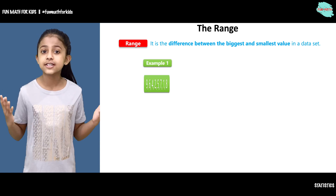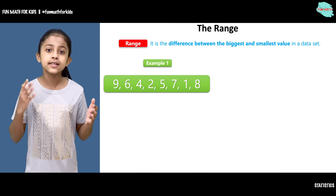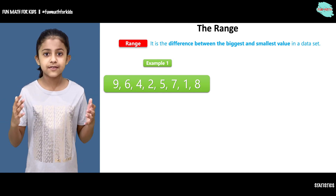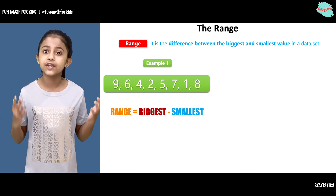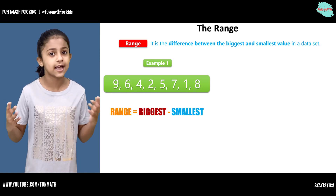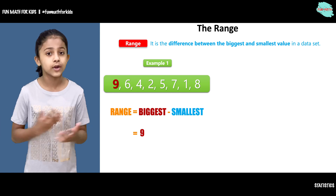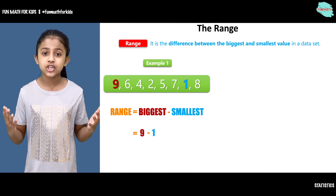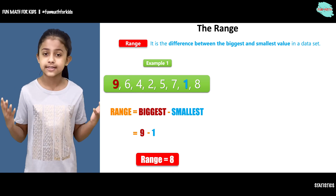In the first example we have a data set. It has numbers 9, 6, 4, 2, 5, 7, 1, and 8. To find the range you have to find the difference between the biggest and the smallest value in the data set. The biggest number is 9 and the smallest is 1. So you will subtract 9 minus 1 and you will get your range as 8.